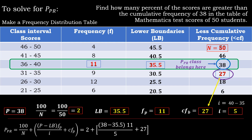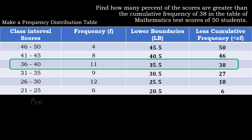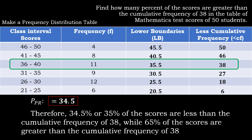To solve for the percentile rank using the formula: PR equals 2, plus the quantity of P which is 38, minus the lower boundary of 35.5, times the frequency of 11, divided by the interval of 5, plus the cumulative frequency of 27. Solving inside the parentheses: 38 minus 35.5 is 2.5, times 11 equals 27.5, divided by 5 equals 5.5, plus 27 equals 32.5. Then 32.5 plus 2 equals 34.5. Therefore, the percentile rank is 34.5. This means 34.5% or 35% of the scores are less than 38, while 65% of the scores are greater than the cumulative frequency of 38.